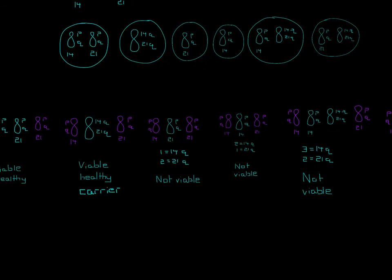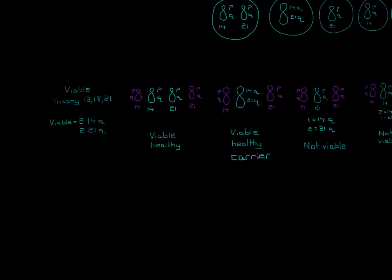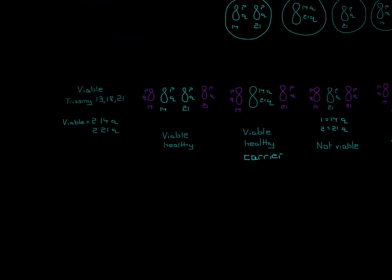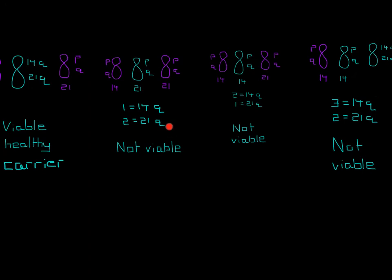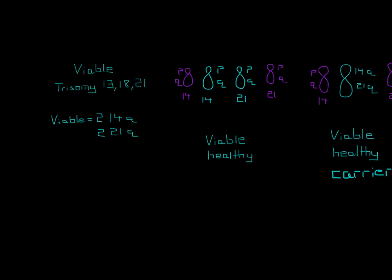For the third combination — dad contributes just the 21 — we count only one 14q total. That would be monosomy 14, which is not viable, because there are no viable autosomal monosomies. So this offspring will not be viable. For the fourth combination — dad contributes just the 14 — we have two 14qs but only one 21q. That would be monosomy 21, which is also not viable. Trisomy 21 is viable, but monosomy 21 is not.